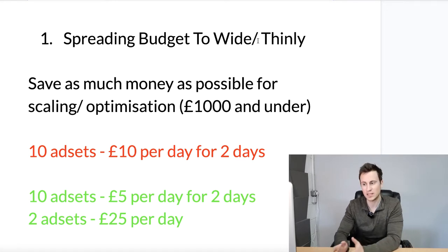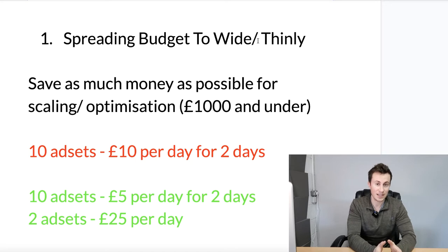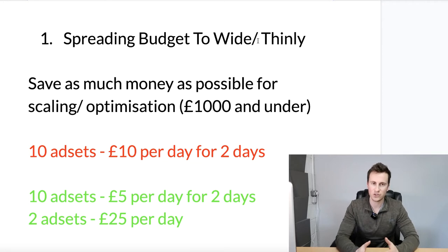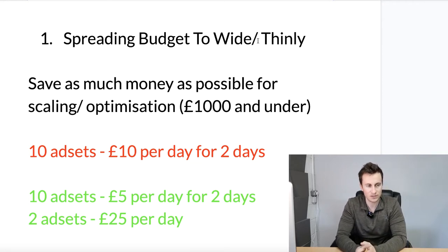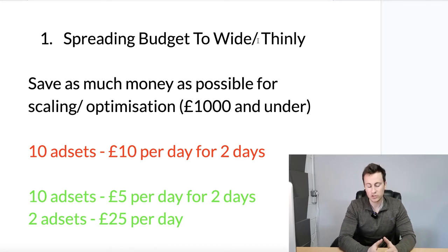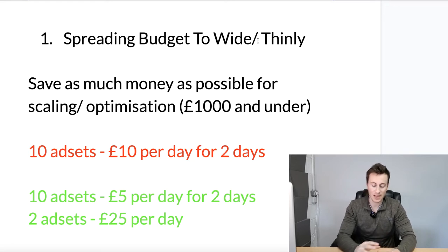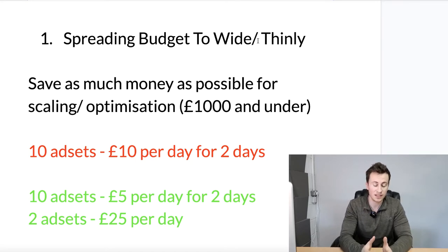What I'd like to break it down into is: you're either testing or you're scaling, and there should be a strategy for each. If you're on a tight budget — anything under a thousand pounds — you need to save as much of your budget as possible for the scaling and optimization phase. With a budget less than a thousand pounds, during the testing phase you're not going to have enough money for each ad set to optimize and perform at its most efficient. So go super broad in the beginning, test as many different audiences as possible on a small budget for two or three days, then switch them all off and evaluate the data.